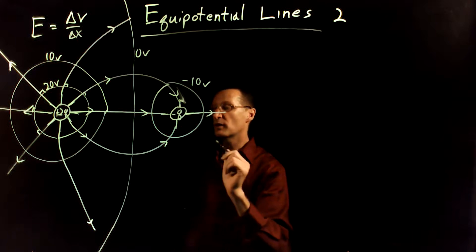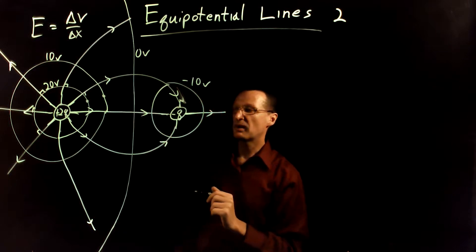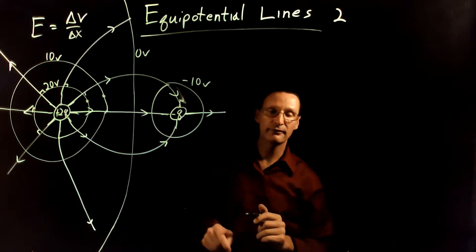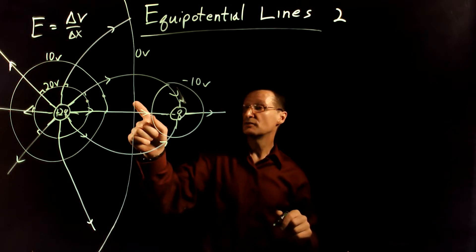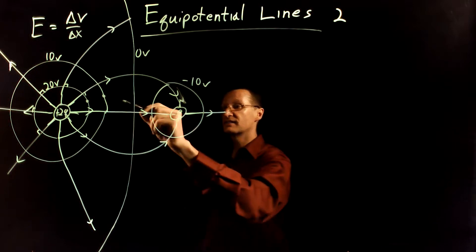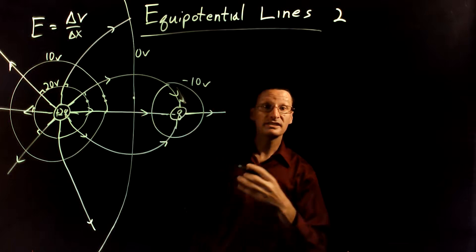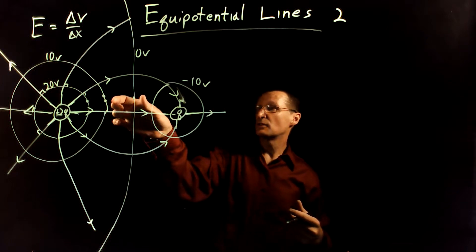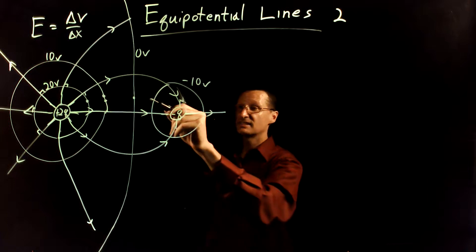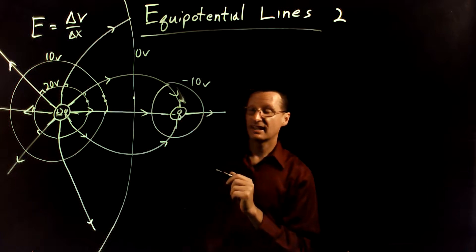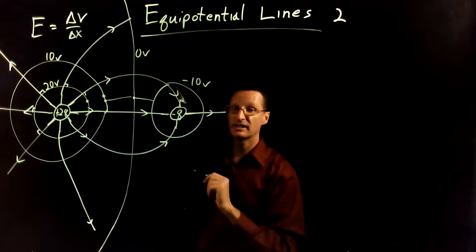One more thing: if a positive charge moves from the 20 volt line to the 10 volt line, how does the kinetic energy it gains compare to traveling from the 10 volt line to the zero volt line? Well, it's going to be the same — even though it's a bigger physical distance going from 10 to zero, it's still going to gain the same kinetic energy. Similarly, going from zero to negative 10 is going to be the same kinetic energy gain.